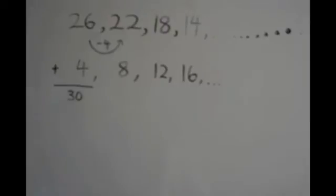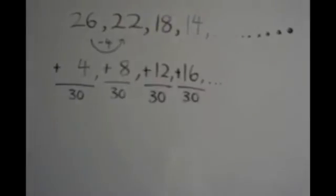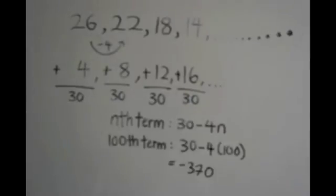For sequences that decrease uniformly, you will see the difference between the numbers of the sequence. For this case, it's negative 4. Write the sequence of 4 underneath. You will realize when you add the numbers of the first sequence and the second sequence, you will get 30. So the nth term would be 30 minus 4n. To find the 100th term, just like before, replace n with 100, and you will get the 100th term, which is negative 370.